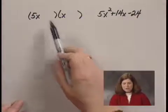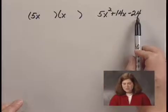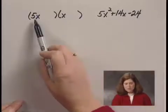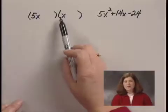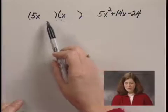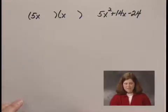Now, I'm going to choose numbers so that the product is negative 24. I've already chosen the first term in each binomial so that the product is 5x². So what I'm really going to be checking for is the middle term. Is it 14x?